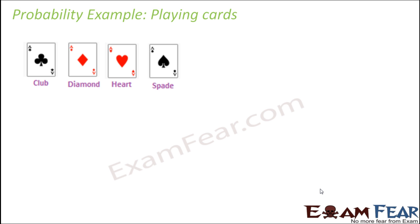Another very popular example of probability comes into picture with the playing cards. Have you ever played with these playing cards? If not, you must be knowing about it because this is also a very common game. When you see a pack of cards inside the packet, there exists a total of 52 cards. When you look at those 52 cards, you would see that there are just 4 types of cards. Here on the screen you can see the 4 types: Club, Diamond, Heart and Spade. Club and Spade are black in color; Diamond and Heart are red in color.